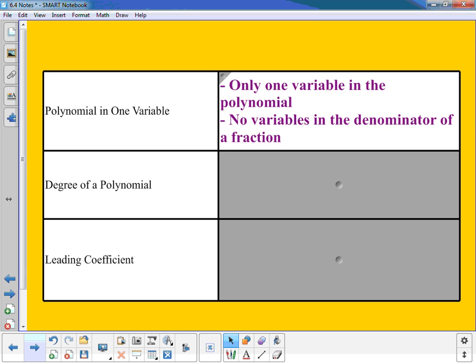When we look at the degree of a polynomial, we're looking for the largest degree of any monomial in the polynomial. So we've talked about this degree of polynomial in the past. We looked at each monomial separate and then found the largest exponent in that case.